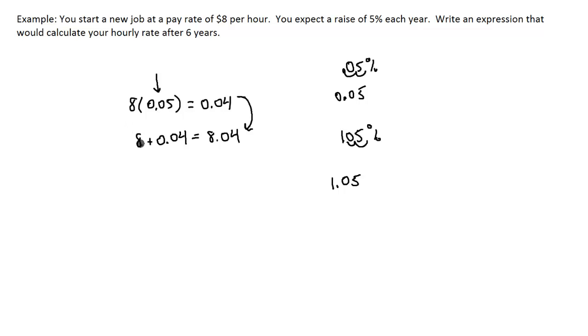So if we take $8 and multiply it by 1.05, that's going to be 105% of $8, and that's going to give us our $8.04. So by adding a $1 there, it brings along that $8 with us.